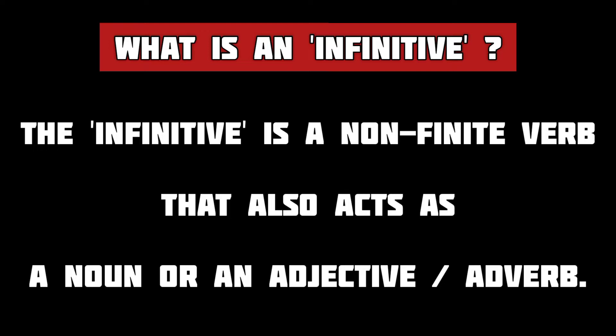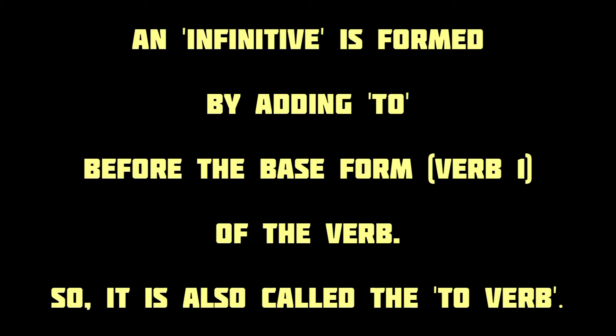But how do you identify an infinitive? What is the structure of an infinitive? An infinitive is formed by adding 'to' before the base form of the verb, and that is why it is called the 'to verb.' So remember that an infinitive is made from the root form of a verb by adding 'to' before it — it is also called the to-infinitive in English grammar.